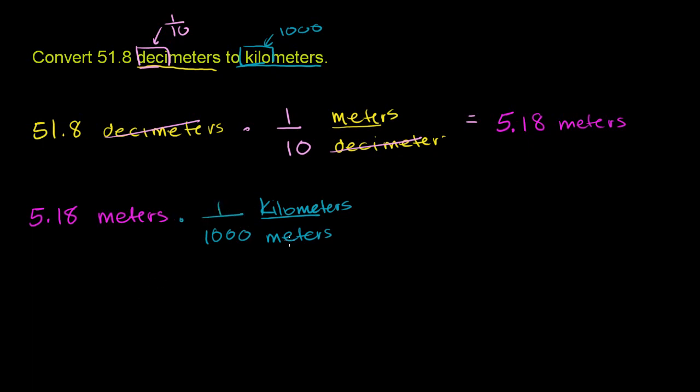So if we were to multiply this, the meters cancel out. We'll just be left with kilometers. And multiplying something by 1 over 1,000 is the exact same thing as dividing by 1,000. And that makes sense. We should get a smaller number here, because we're going from a smaller unit to a larger unit. So this is going to be equal to 5.18 over 1,000 kilometers.